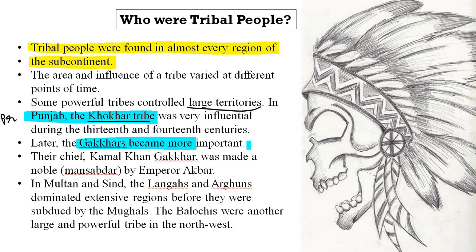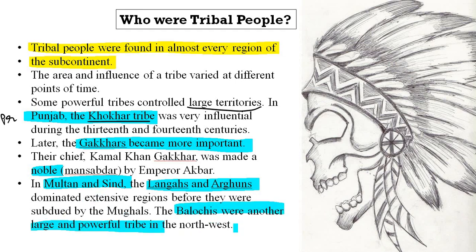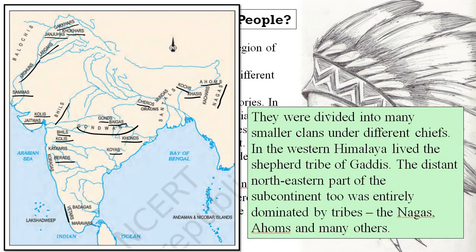In Multan and Sindh, the Langhas and Arguns dominated major regions. The Baluchis were another large and powerful tribe in the northwest. They were divided into many smaller clans, as these tribes also had sub-branches.